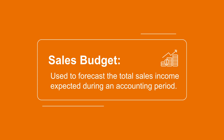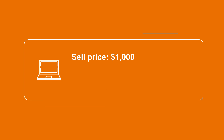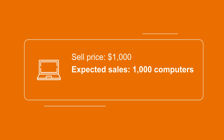After you list the number of items you expect to sell, multiply it by the price of the item to calculate how much sales revenue the company will be expected to make during the accounting period. For example, if the selling price of a computer is one thousand dollars and they expect to